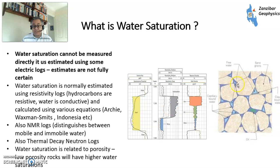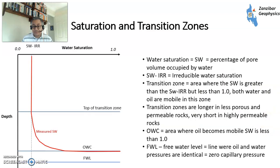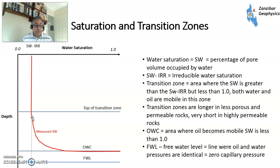Here's a picture of some logs and some pores - the dark blue is the water and the red is the hydrocarbons. Looking at saturation transition zones: the water saturation is the percentage of pore volume occupied by water. Irreducible water saturation is shown by this line - there will always be some water which just won't move, that's called irreducible water saturation. The transition zone is this section here.